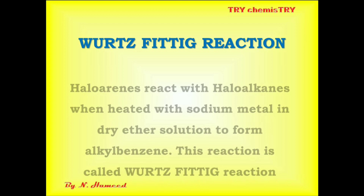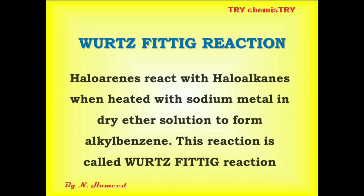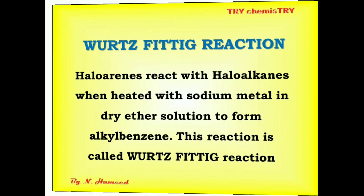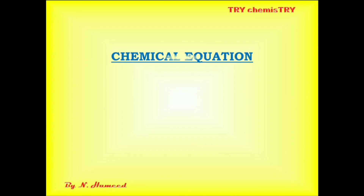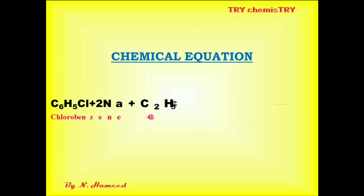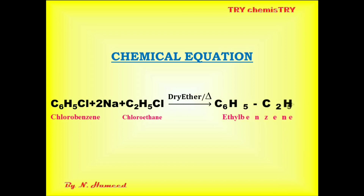Now we can see the third reaction: the Wurtz-Fittig reaction. Haloarenes react with haloalkanes when heated with sodium metal in dry ether solution to form alkylbenzene. Both aryl and alkyl groups combine — this gives the Wurtz-Fittig reaction. One molecule of chlorobenzene and one molecule of chloroethane with two sodium atoms in dry ether solution gives ethylbenzene with removal of two molecules of sodium chloride.